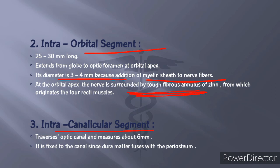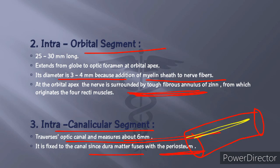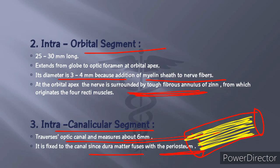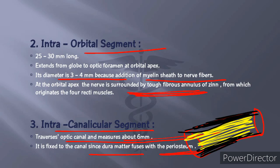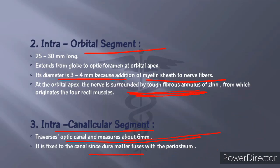The intracanalicular part is located within the optic canal and measures about 6 millimeters in length. It is fixed to the canal because the dura fuses with the periosteum of the optic canal. This is an important point to remember.